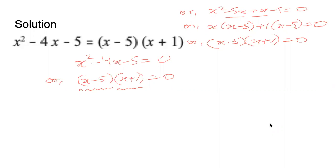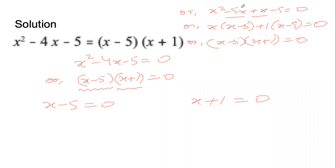When we multiply two factors and get 0, that means the product of the factors equals 0. So x−5 = 0 or x+1 = 0, giving x = 5 or x = −1. The quadratic equation has become two linear equations, each giving one solution.